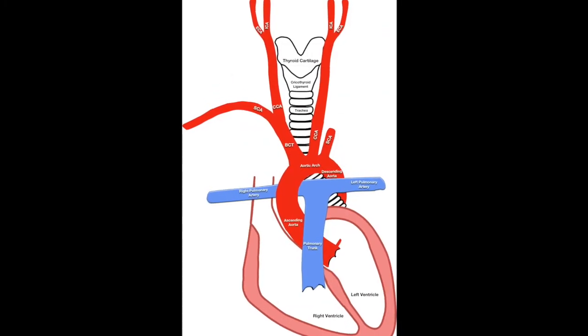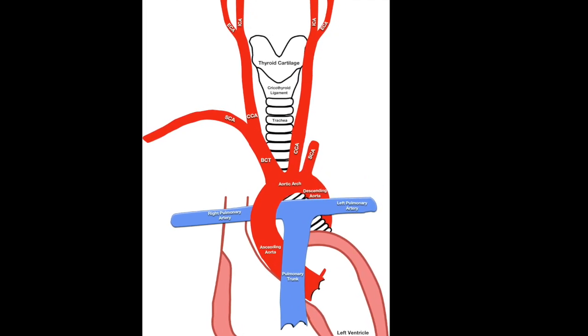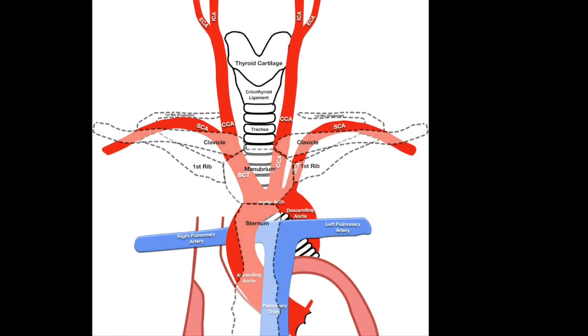The left subclavian artery is the third and final branch of the aortic arch. It ascends superiorly, laterally and slightly posteriorly towards the proximal left clavicle. From there, its course mirrors that of the right subclavian artery as it extends towards the left shoulder lying behind the clavicle and the subclavian vein.